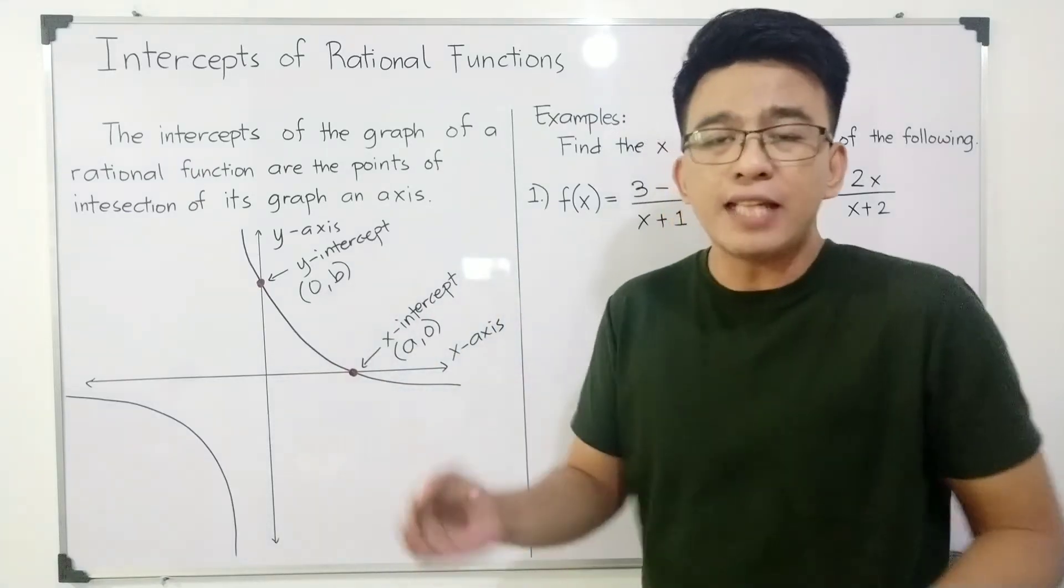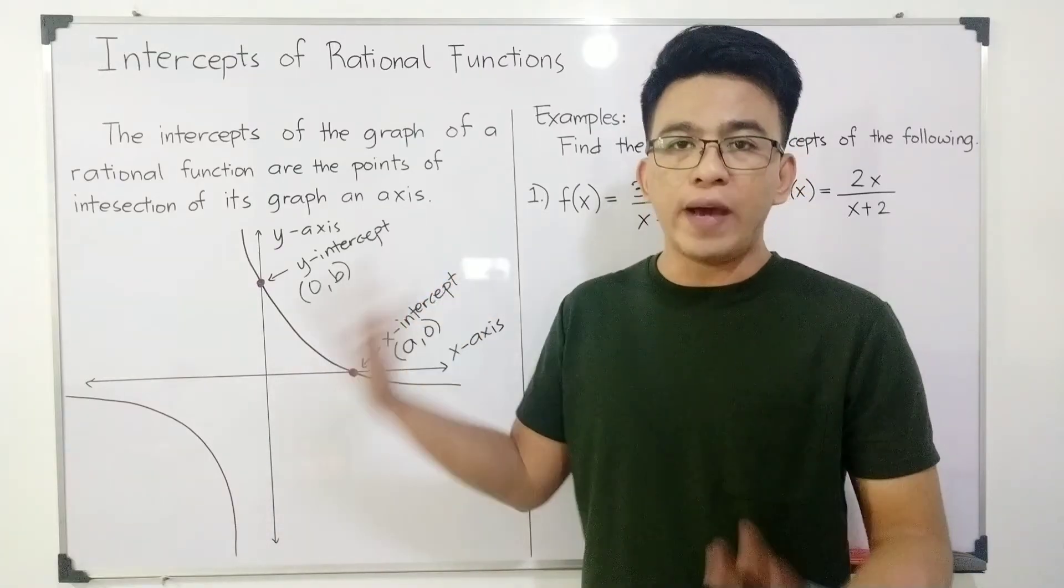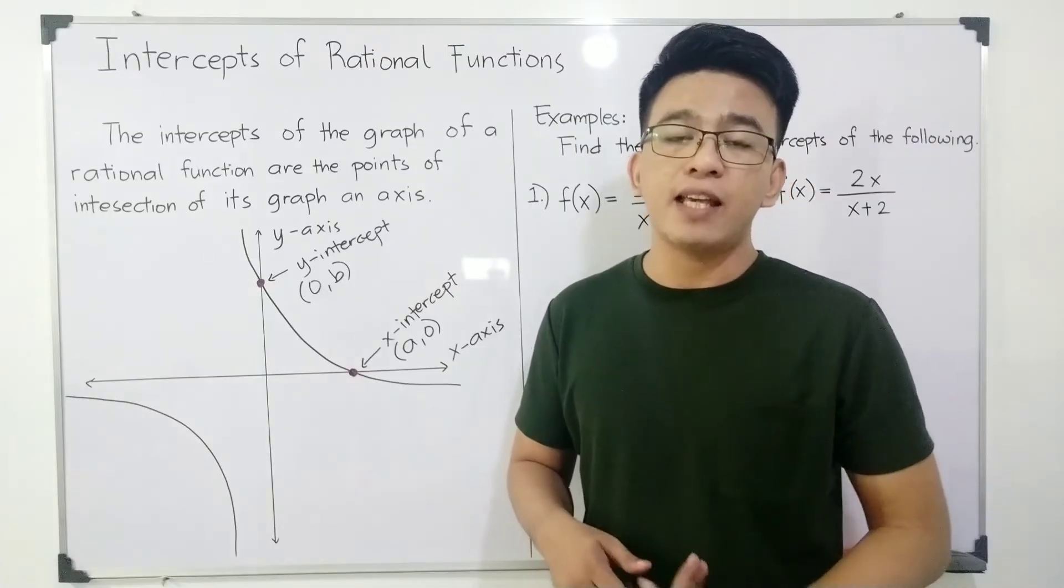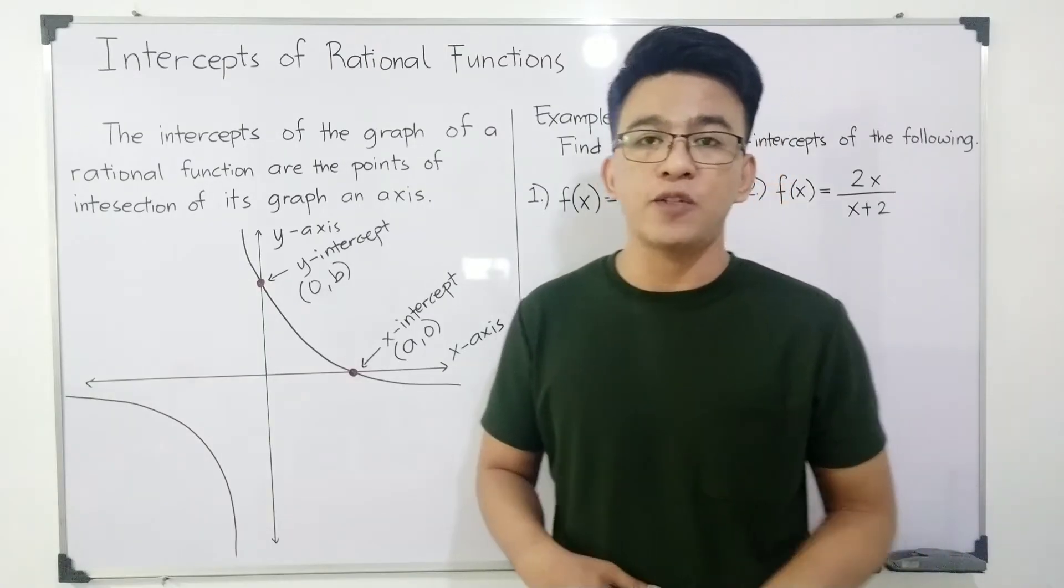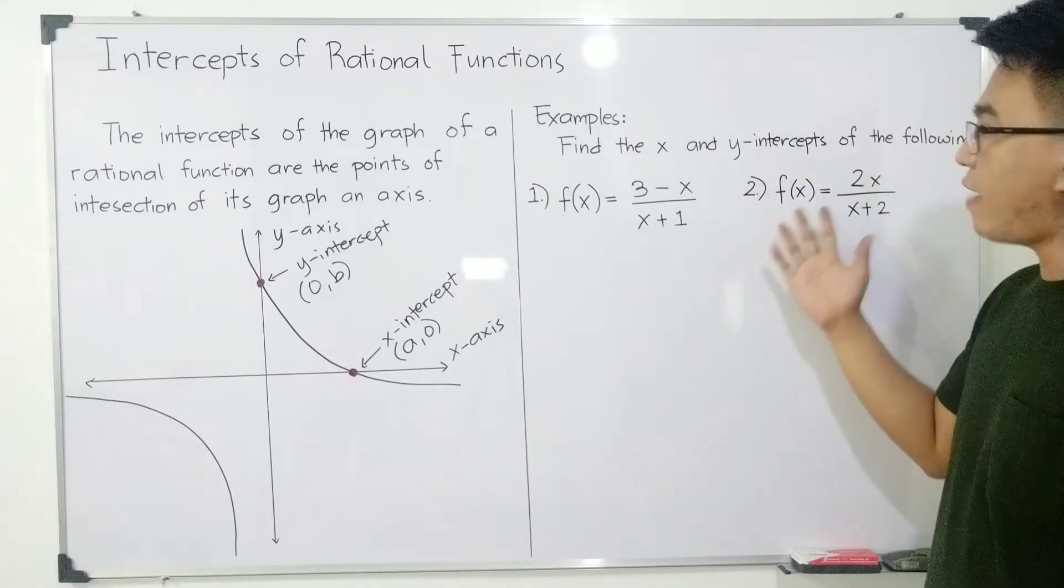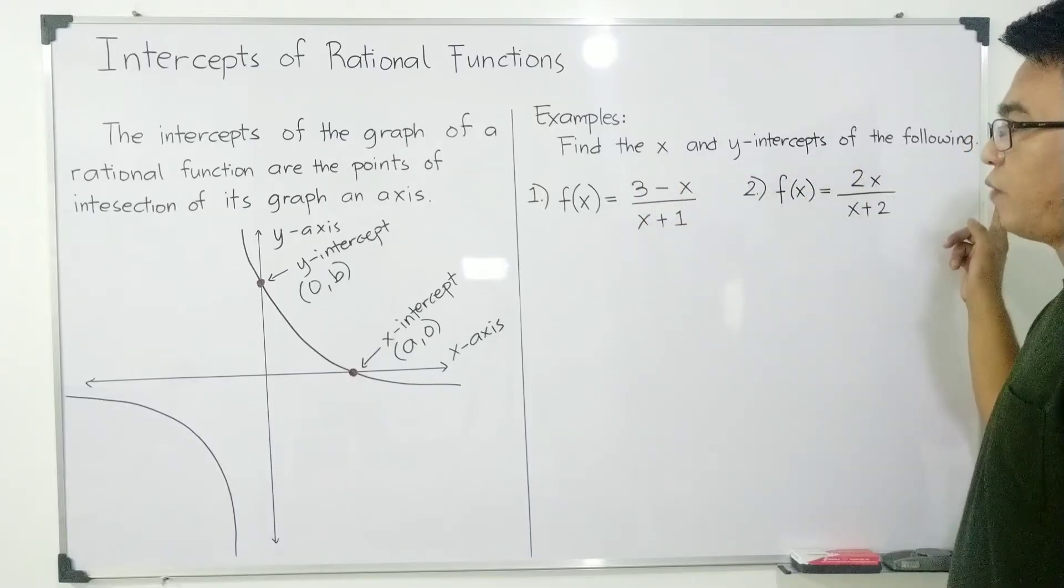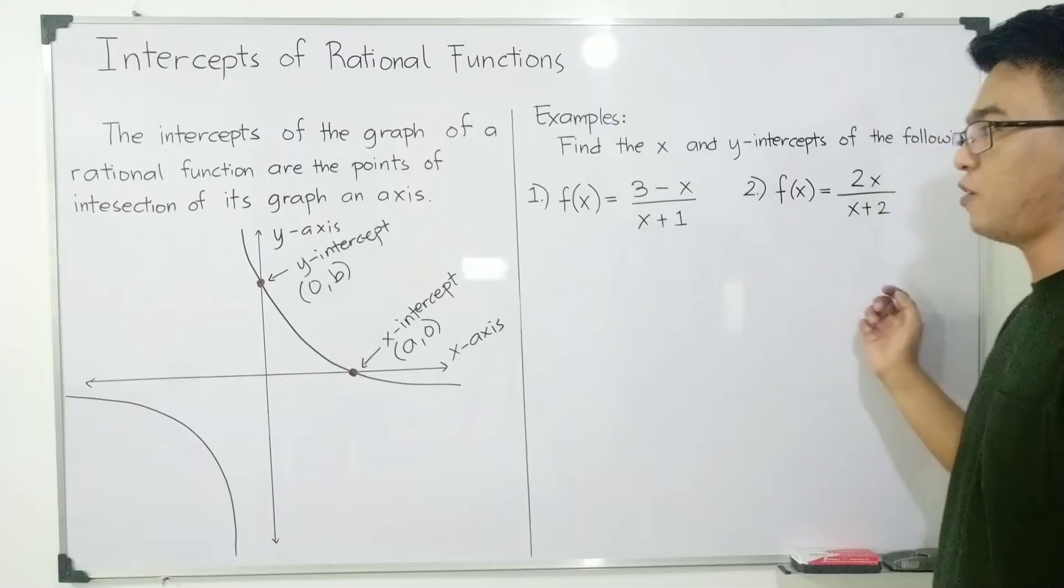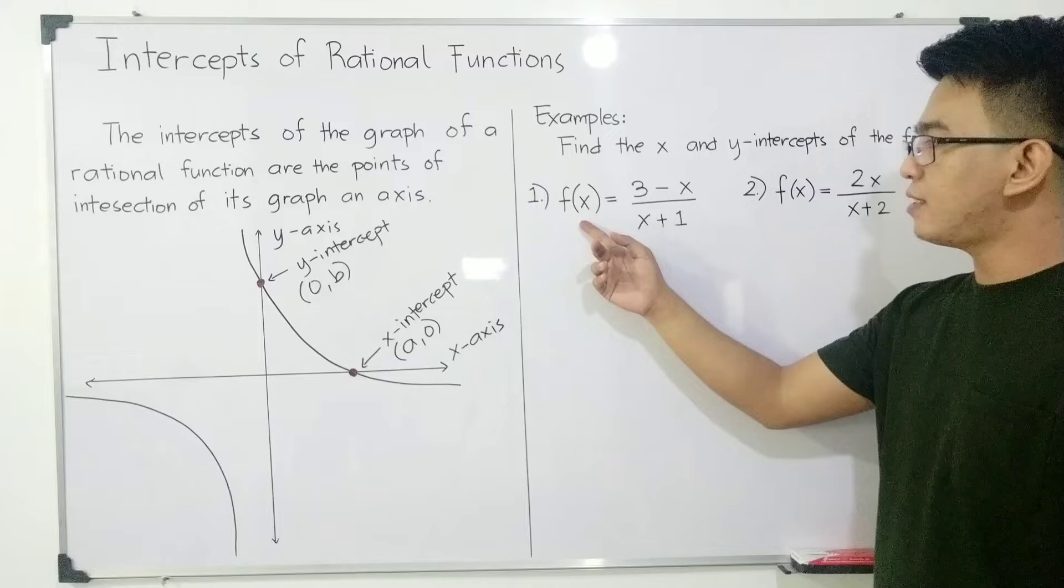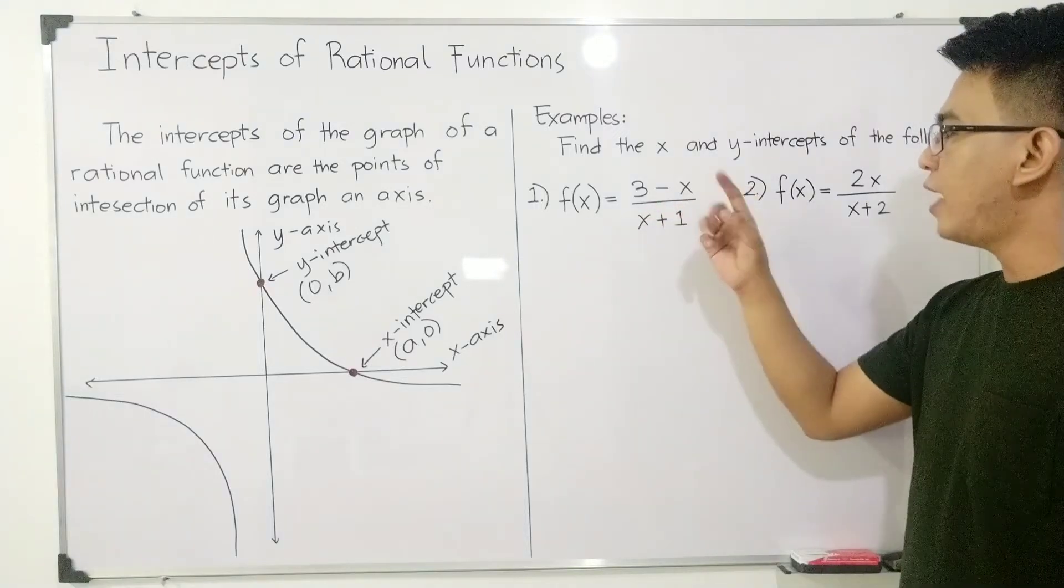So now, the main concept of this video is to give you the way or the knowledge on how to solve or find the x and y-intercepts of a rational function. So let's have here the examples. We have the direction: find the x and y-intercepts of the following. These are examples of rational function. Now let's start with item number 1. For number 1, we have f(x) = (3-x)/(x+1).